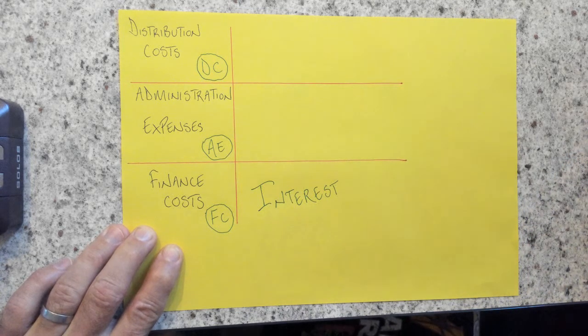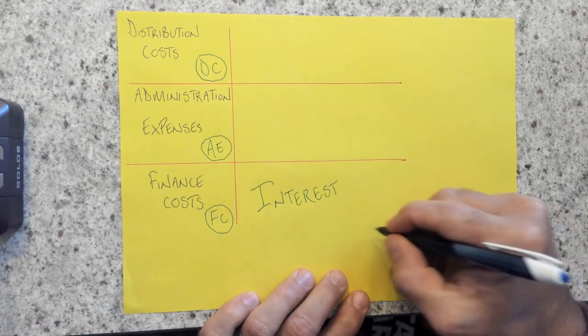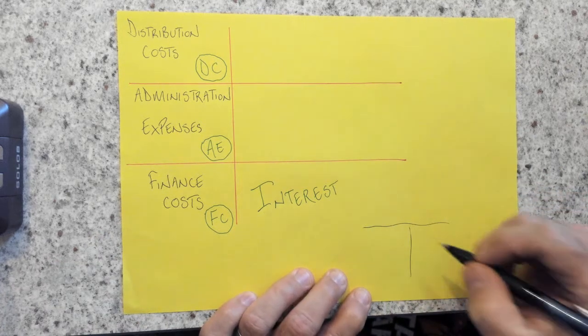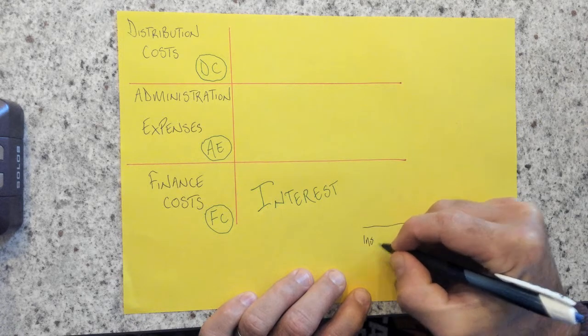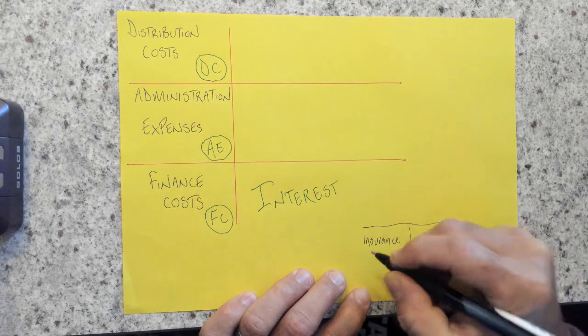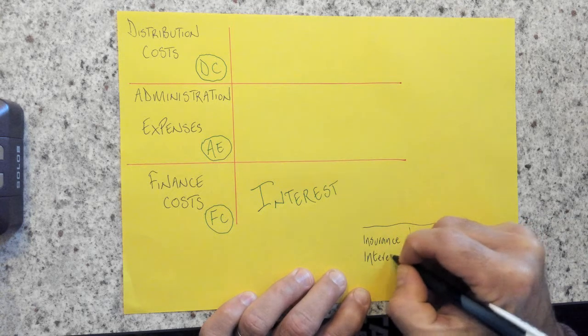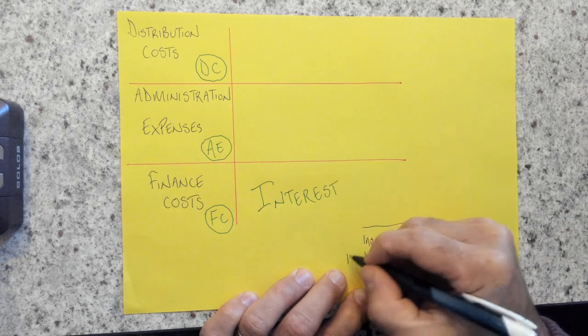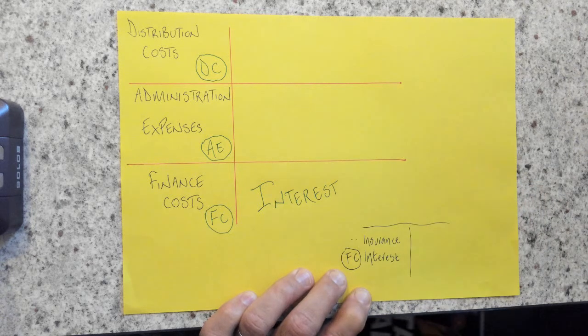Now, what the examiner will tend to do or always do is within the trial balance, they'll try and be slightly sneaky. And they'll put interest next to the word insurance, just to try and trick you. But we are looking for that magic word of interest, which means that it's a finance cost. Yeah, and that will be something else, which we'll do in a second.